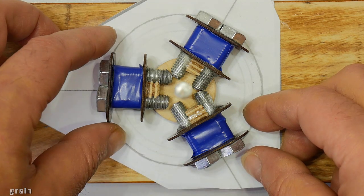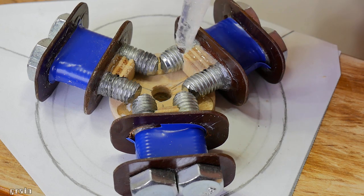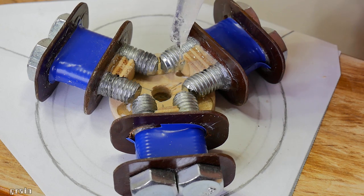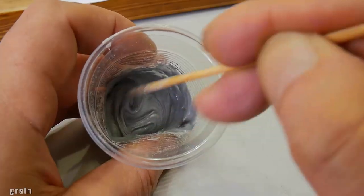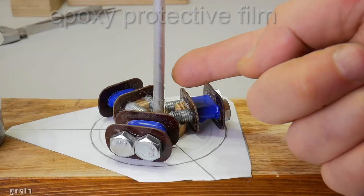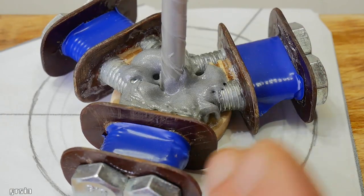It is important to position the coils as level as possible. I fixed the iron cores with glue. Then I filled the cores with filled epoxy. The filler is needed so that the epoxy does not spread very much.